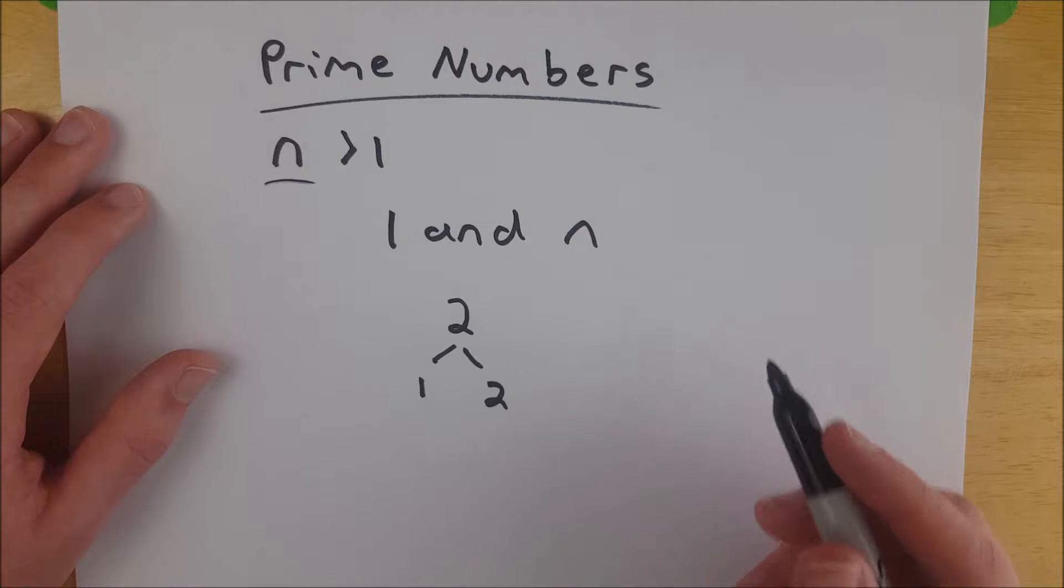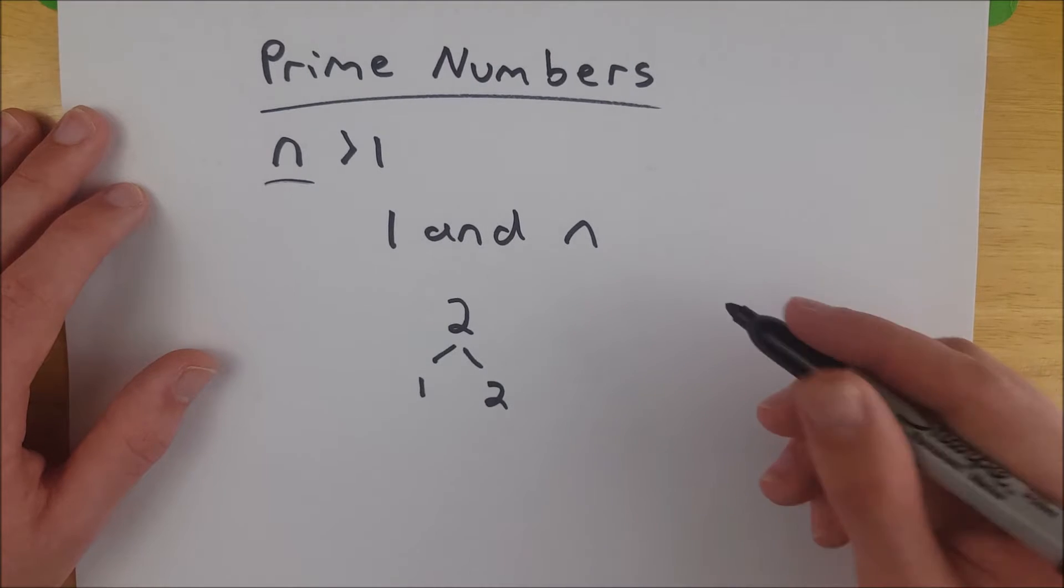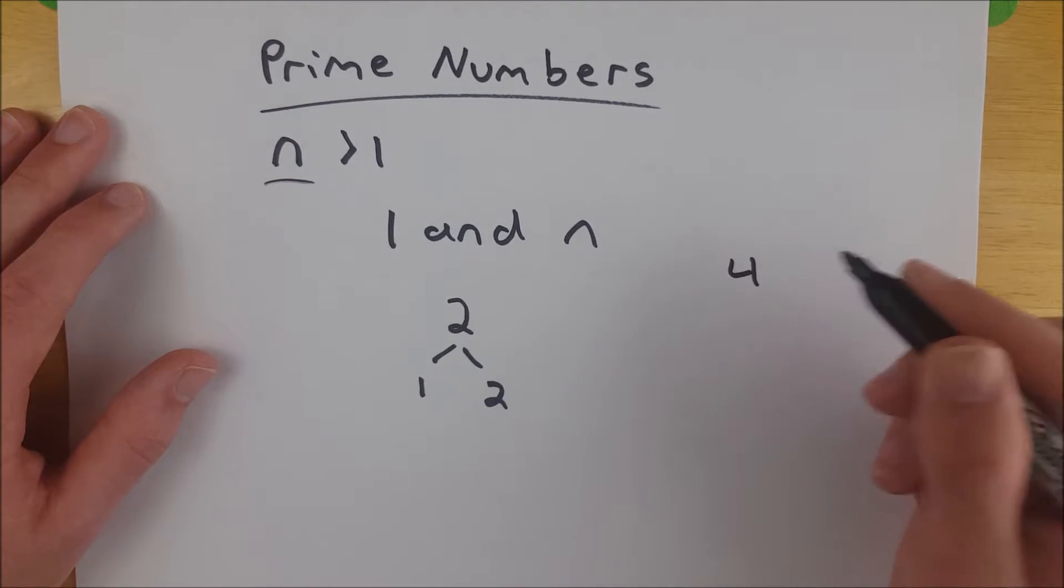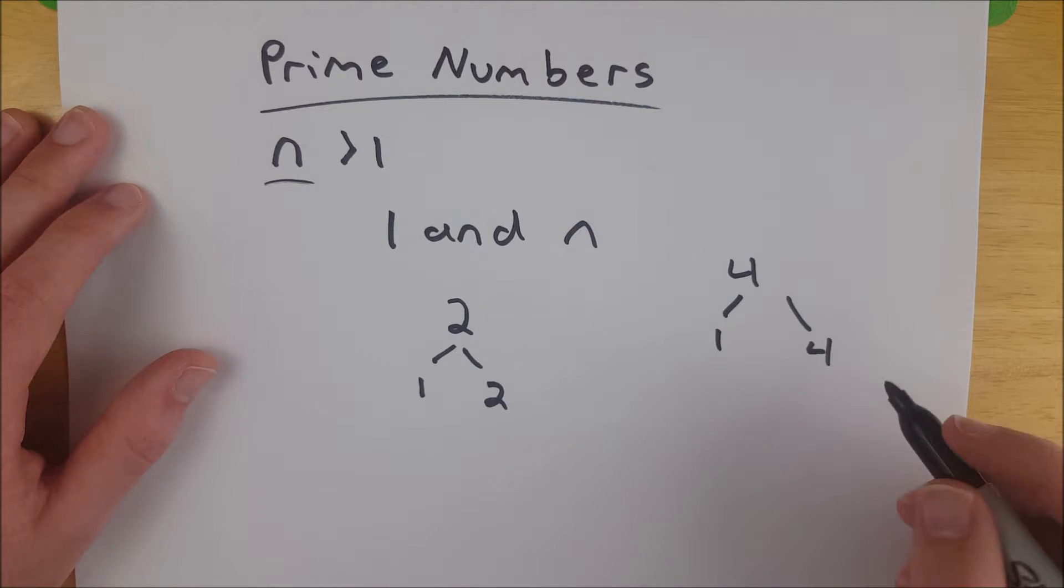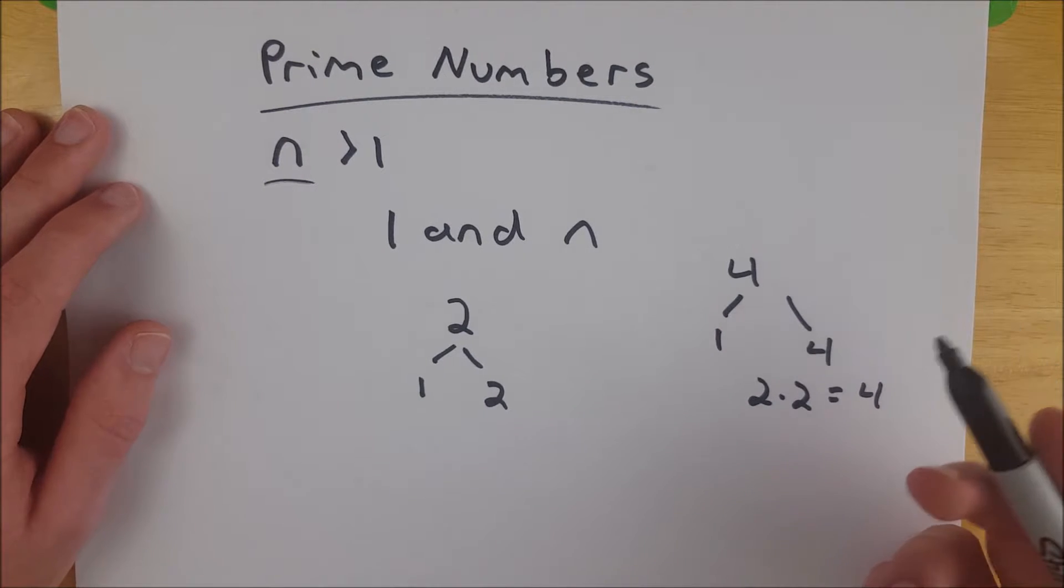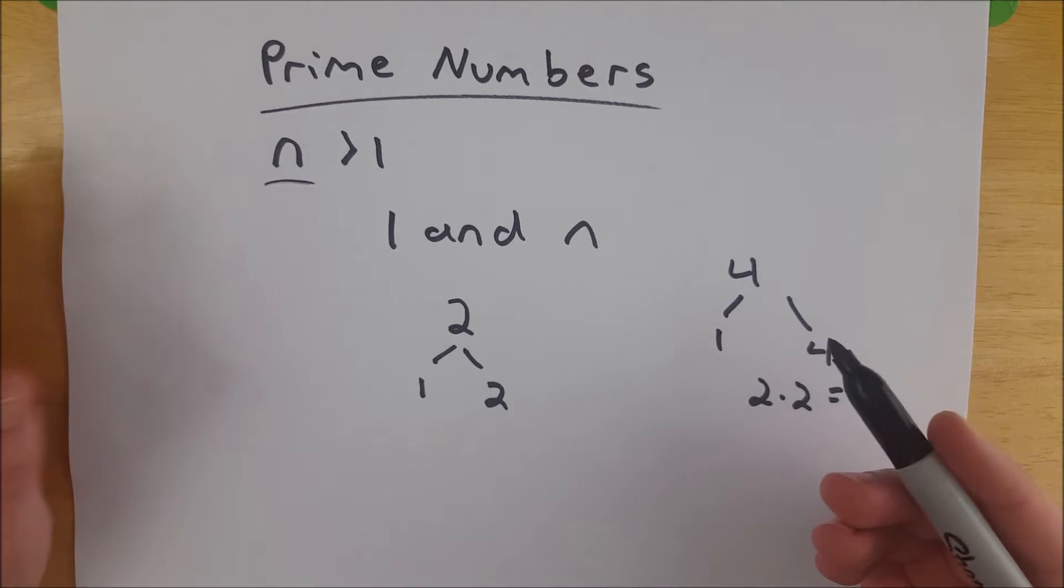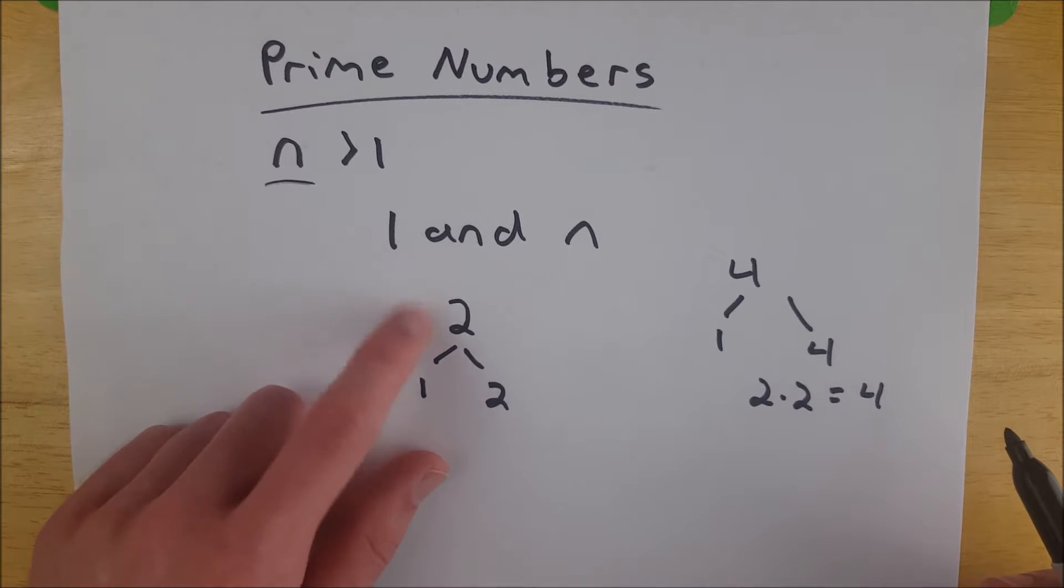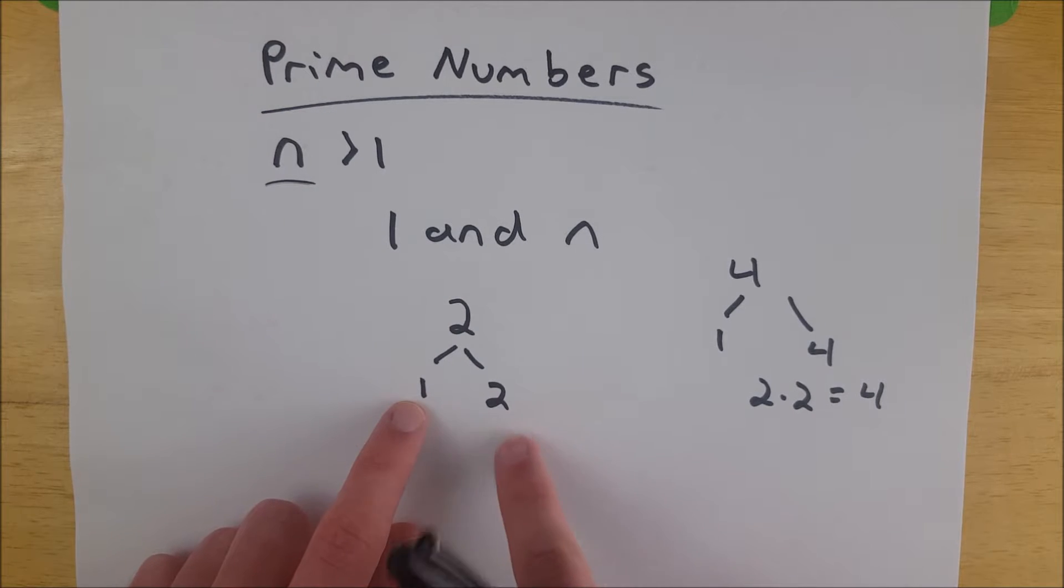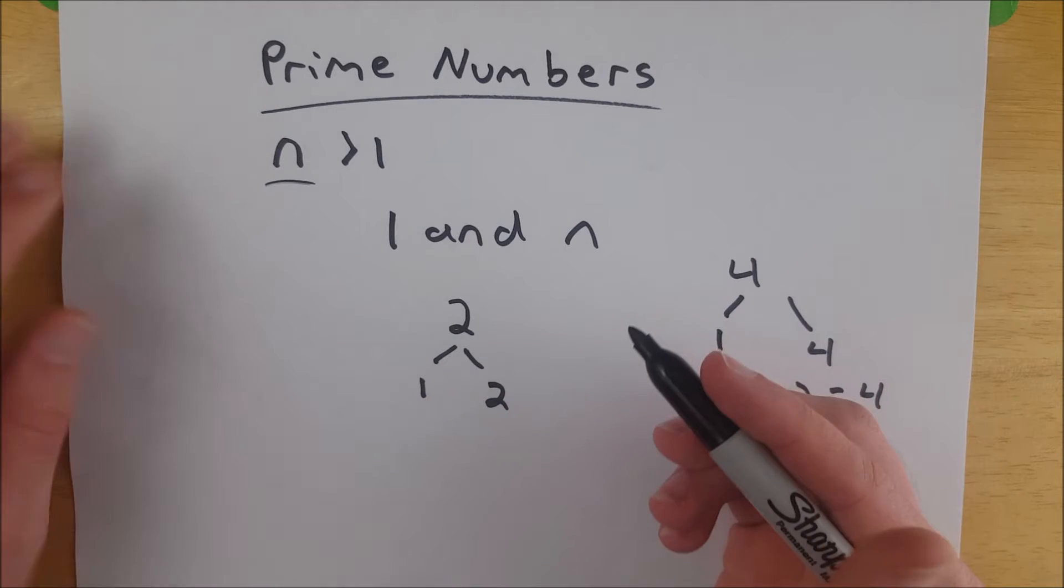No other even number in the world is a prime number and that is because if we look at a number like four, it has factors one and four but it's also going to have a factor of two. Two times two is equal to four and two times anything is going to get you any other even number. Two times three is six, two times five is ten. You can get any other even number by multiplying two by some other number. So two is the only even number that is going to have unique factors like this.